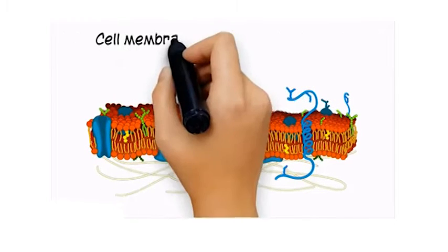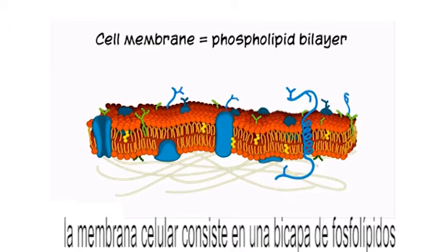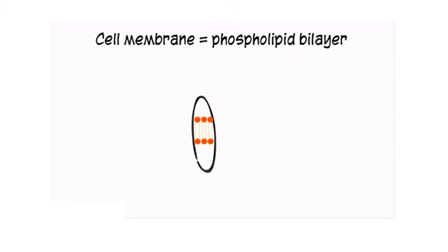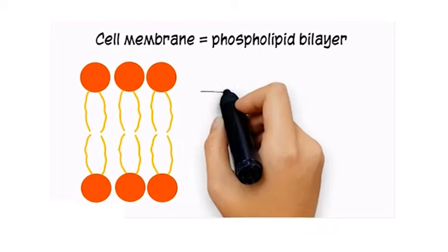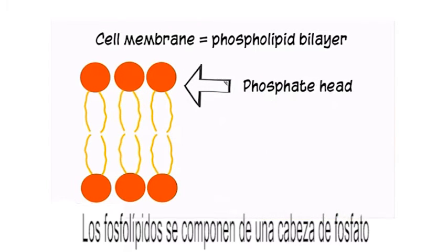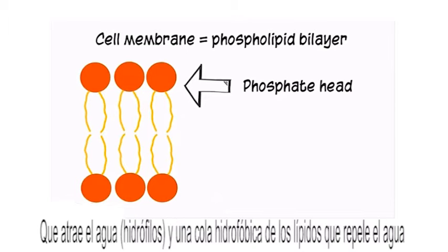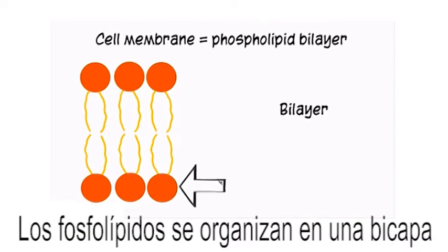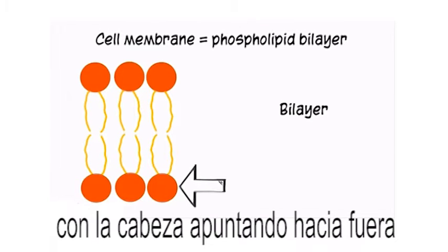The cell membrane consists of a phospholipid bilayer. Phospholipids consist of a phosphate head that loves water, or hydrophilic, and a lipid tail that hates water, or hydrophobic. The phospholipids arrange themselves into a bilayer with the head pointing outward and the tails pointing inward.